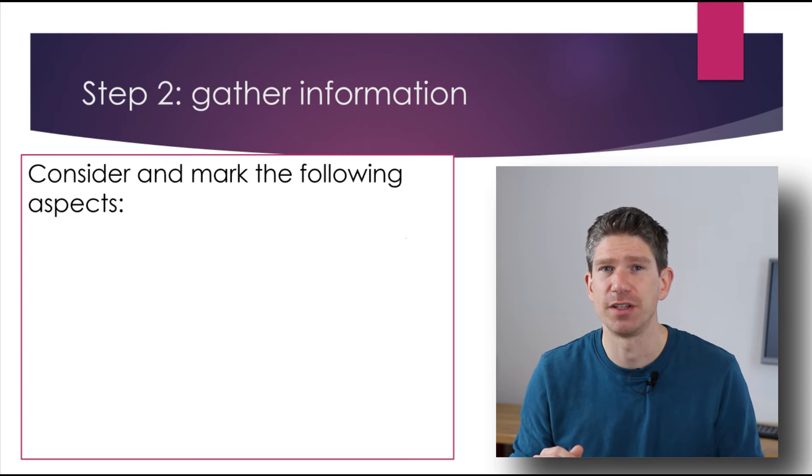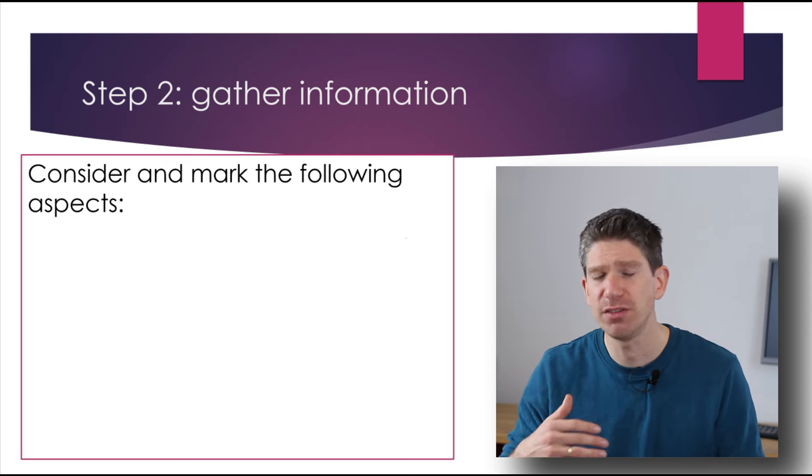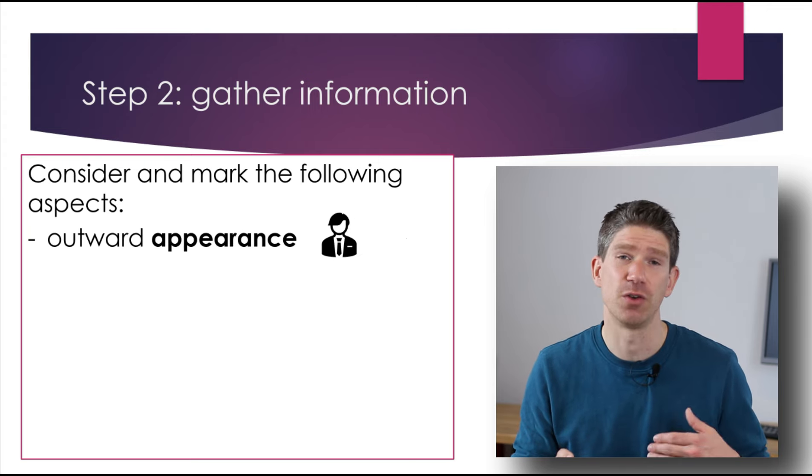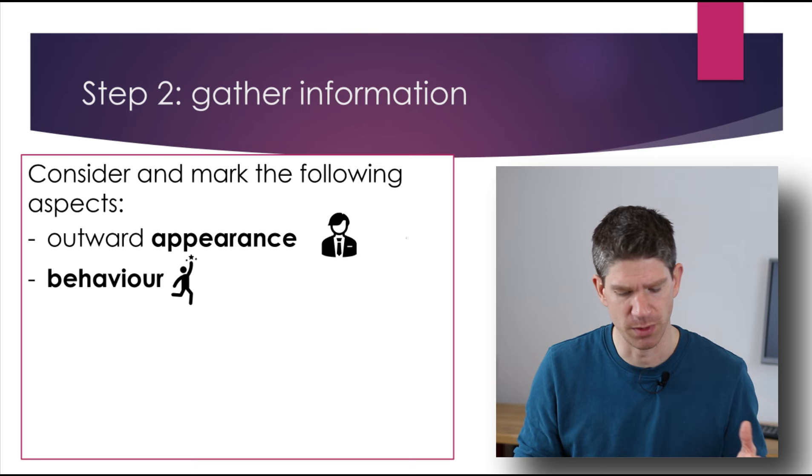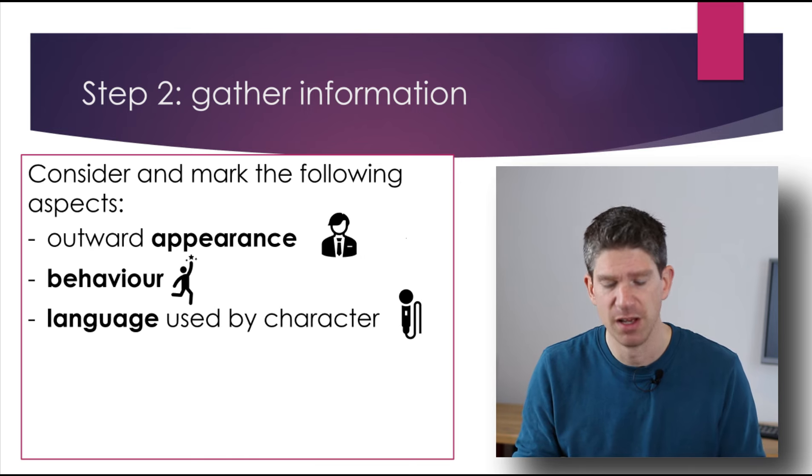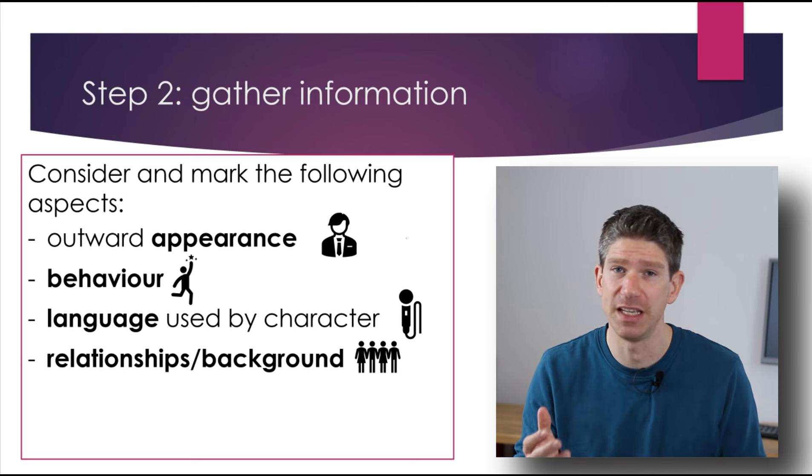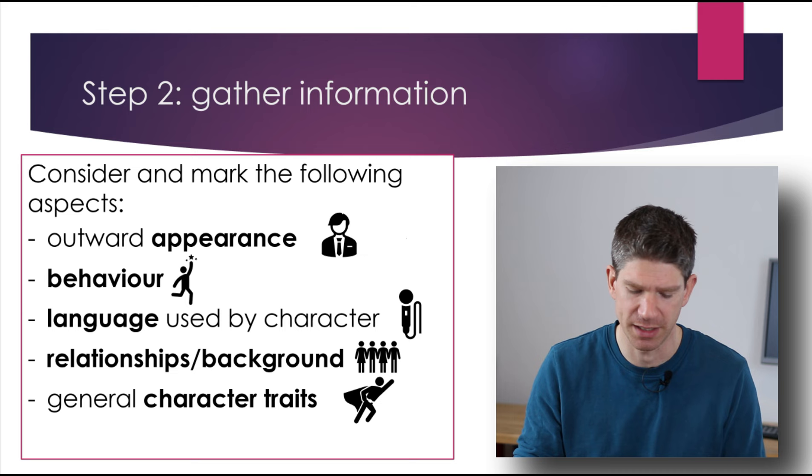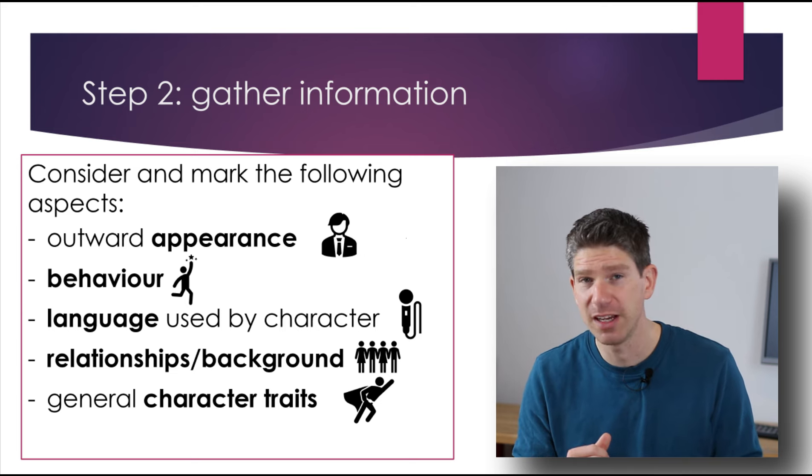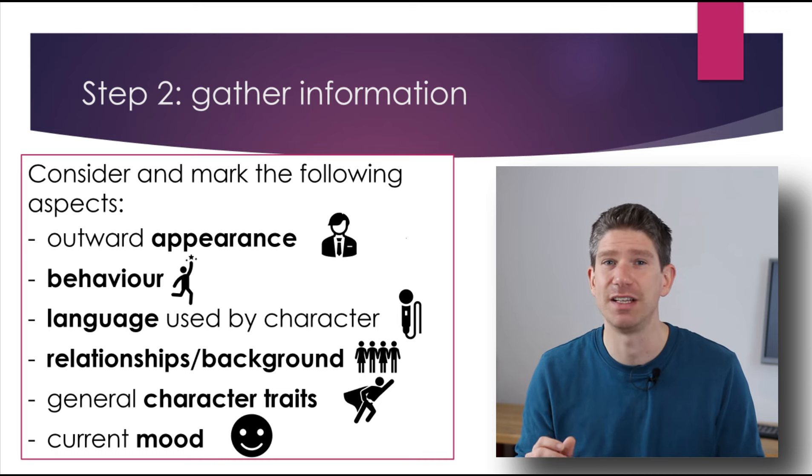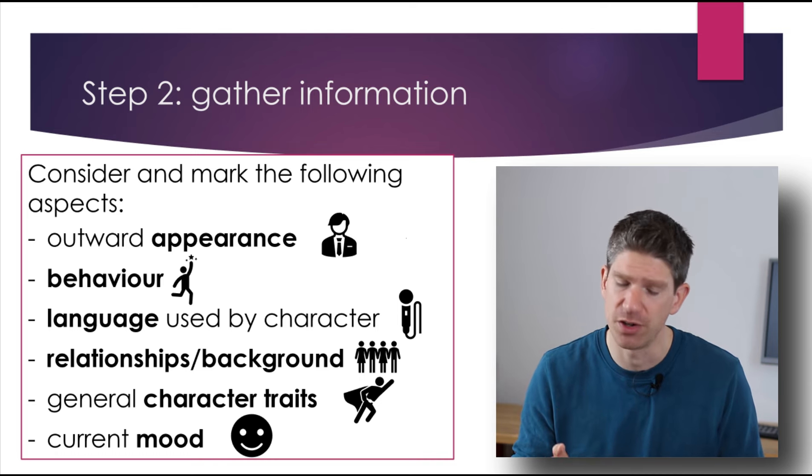And in a second step, you should gather information. And just to give you some ideas of what you could be looking for in a given text, you can look at how's the outward appearance of the person described? What's his or her behavior? What language is used by the character, but also by other characters or the narrator? What kind of relationships does this person have? What's the social background? What are general character traits? So things this person consistently seems to be like, and what is his or her current mood? So in the situation, in the paragraph you're describing or the text you're describing.